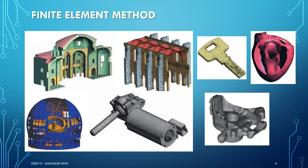Here is an example of discretization or mesh of different solids and structures with finite elements. We have building structures, machine blocks, or even a human heart.